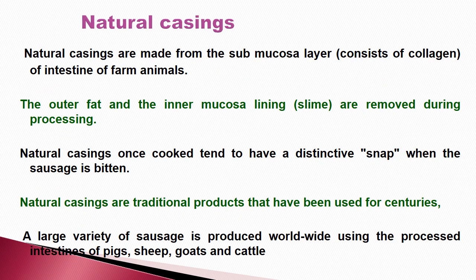Natural casings are made from the submucosa layer, mostly made up of collagen, from the intestines of farm animals slaughtered for meat. The outer fat and inner mucosa lining are removed by scrapping or sliming. When cooked, natural casings have a distinctive snap; the collagen converts to gelatin, giving a specific eating experience that is always preferred when eating sausage.